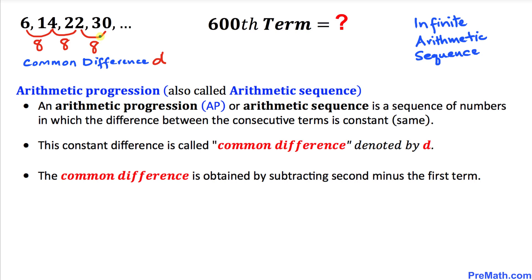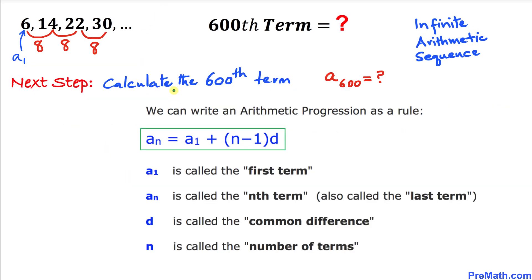Since this common difference is constant and consistent, it's no wonder we call such a sequence an arithmetic sequence. Now let's go ahead and calculate the 600th term of this arithmetic sequence. Here's the formula we will be using: a sub n equals a sub 1 plus (n minus 1) times d.